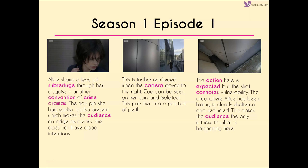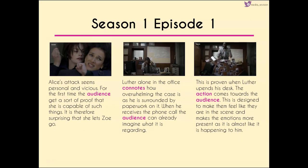This is further reinforced when we see Zoe moving on her own towards the camera — we know she's isolated and it's putting her into a position of peril. The action that follows is expected, but the shot with it suggests the level of vulnerability. Alice has dragged Zoe into a sheltered and secluded area, making the audience the only witness to what is happening. Her attack seems very personal and vicious — for the first time we get visual proof that Alice is capable of the things she's being accused of. It's quite surprising that she actually lets Zoe go.